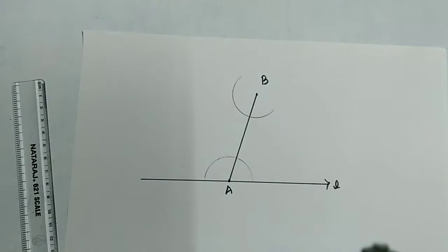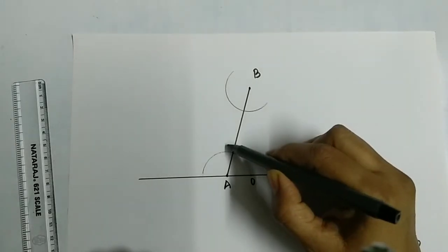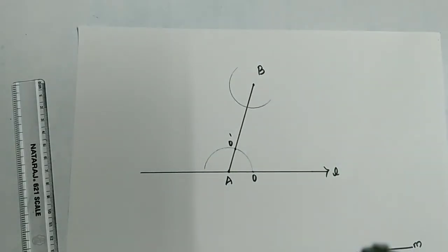So now you have these two points here. Let's take this point as O and this point as O dash. Now we have to measure this O and O dash.